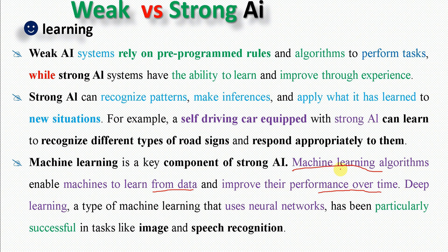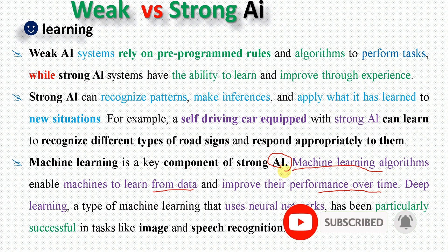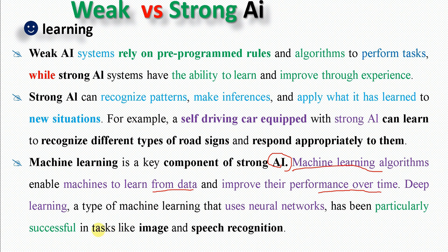The machine learning algorithm requires artificial intelligence techniques including deep learning. Deep learning is a subset of machine learning that uses neural networks, and has been particularly successful in tasks like image and speech recognition.